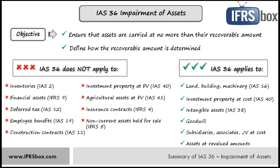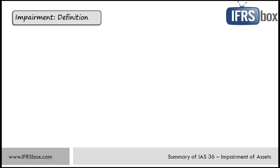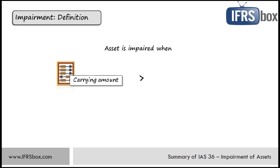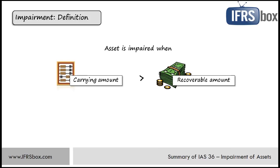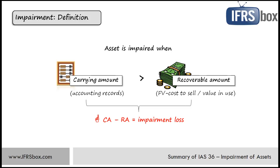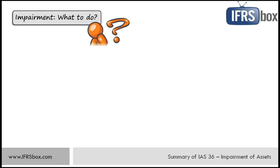Assets carried at revalued amounts under IAS 16 and IAS 38 also fall within IAS 36. An asset is impaired when its carrying amount exceeds its recoverable amount. Carrying amount is the amount at which an asset is recognized after deducting any accumulated depreciation or amortization and accumulated impairment loss. Recoverable amount represents the higher of an asset's fair value less costs to sell and value in use. If carrying amount is higher than recoverable amount, the difference is the impairment loss.